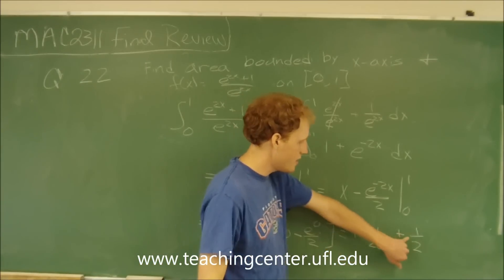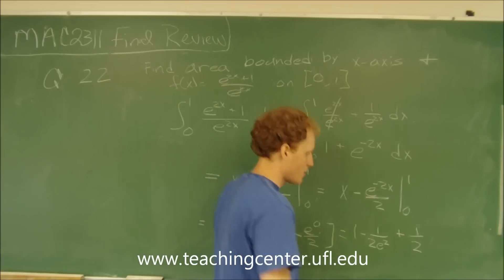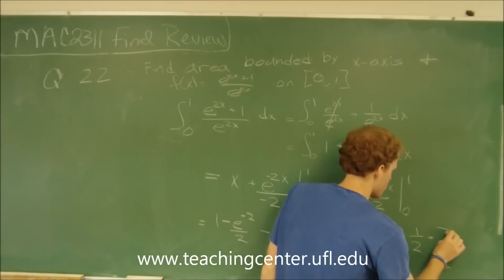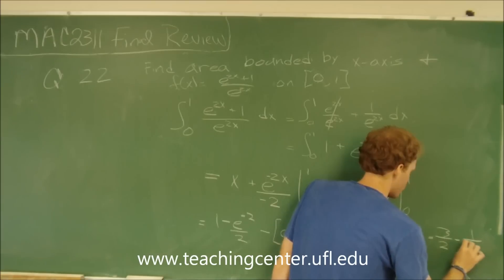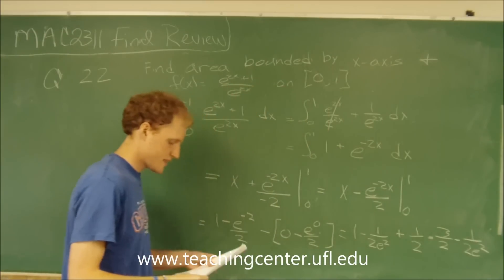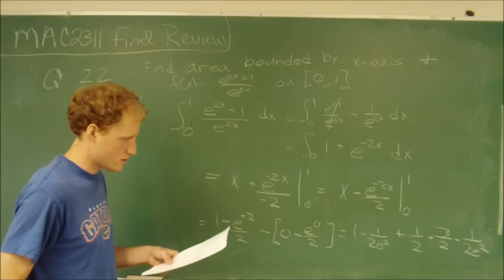We can add the 1 and the 1 half, and we will get 3 over 2 minus 1 over 2 e squared. And that is answer choice b.